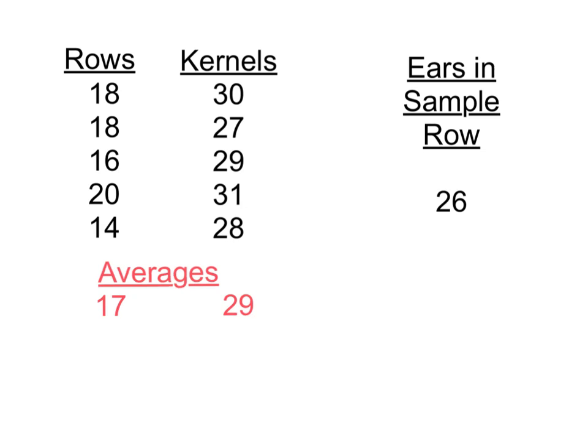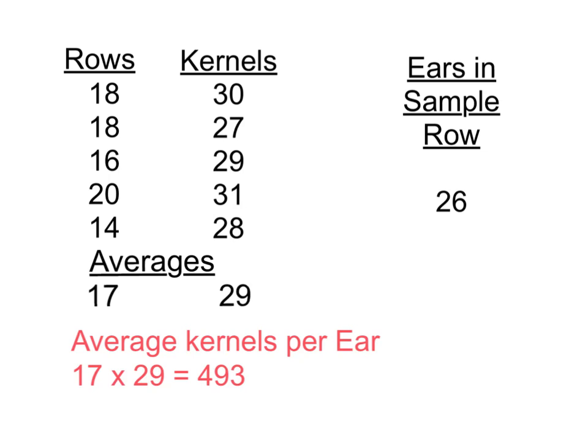By adding the number of rows in each ear and dividing by 5, we get the average number of rows for all ears, rounded to the nearest row. Similarly, we take the five values for the number of kernels down a row, add those up and divide by 5, calculating an average number of kernels. This gives us the typical ear of corn for the entire sample. Multiplying gives us the total kernels per average ear: 17 times 29 equals 493 kernels of corn on our typical ear.